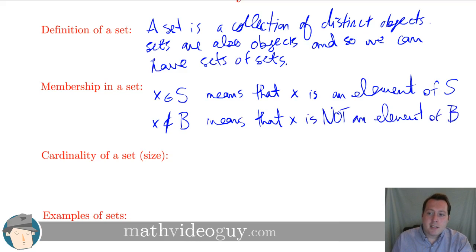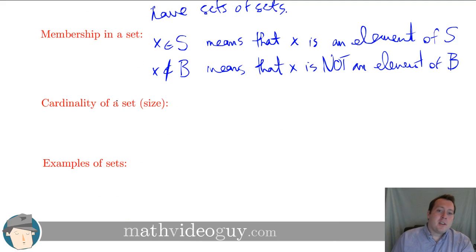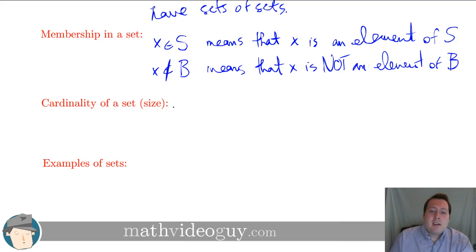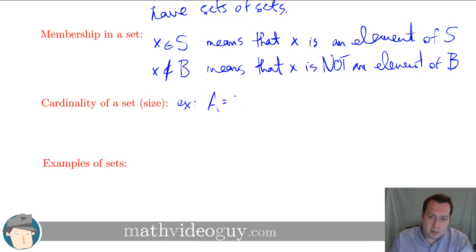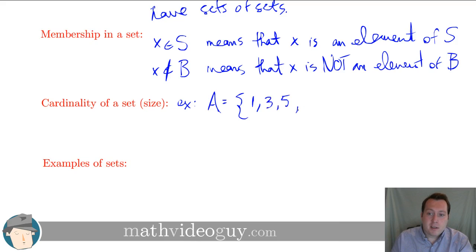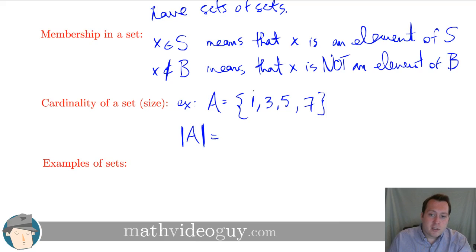The cardinality of a set is basically its size. For some sets it is infinite, and for others it is a finite number. To find the cardinality of a set, you simply count the number of elements in it. For example, if we define set A = {1, 3, 5, 7} using curly brackets, then the cardinality of A — written with two vertical lines like absolute value — is 4, since there are four elements.